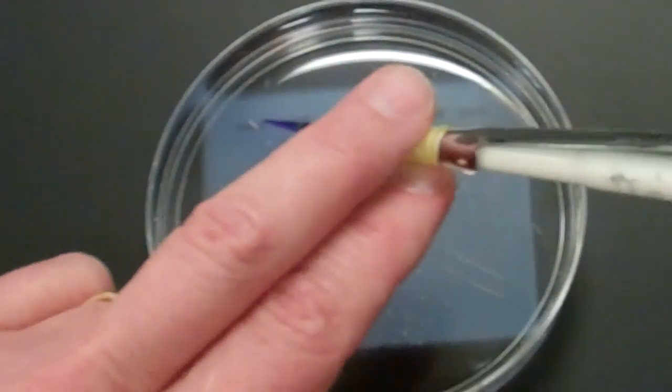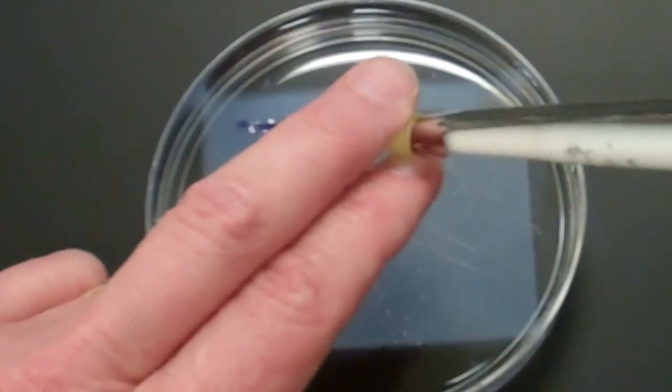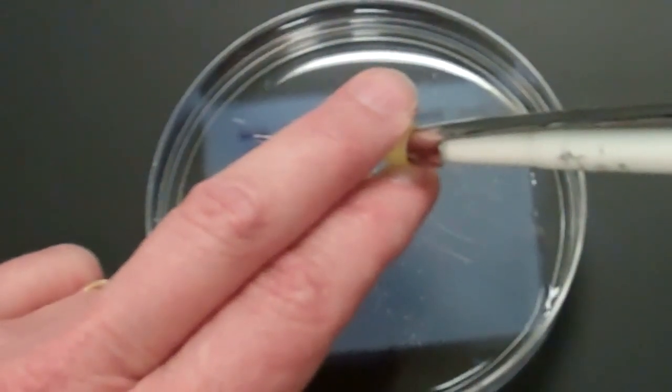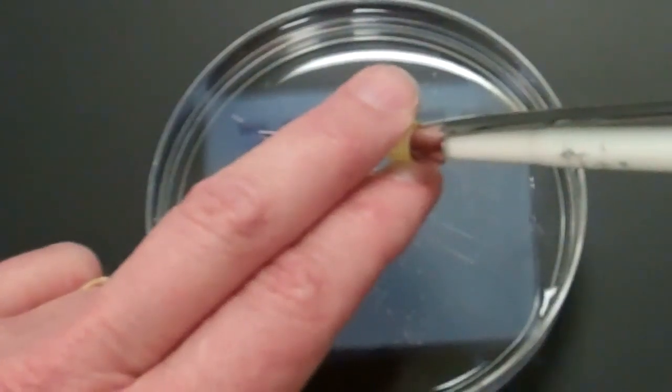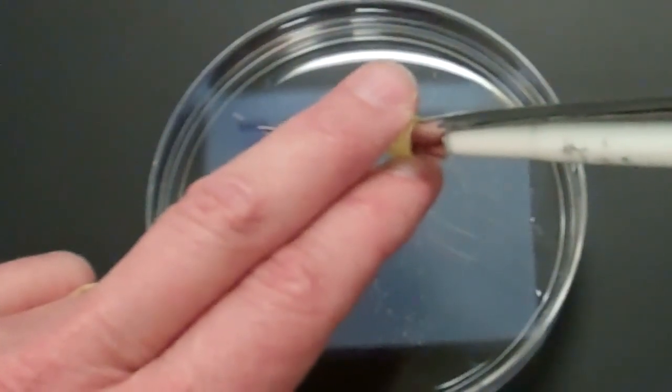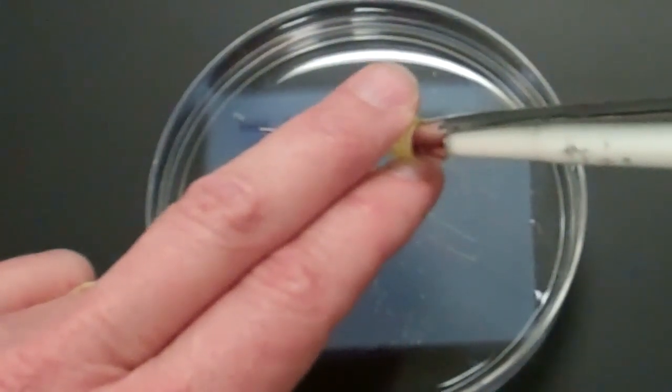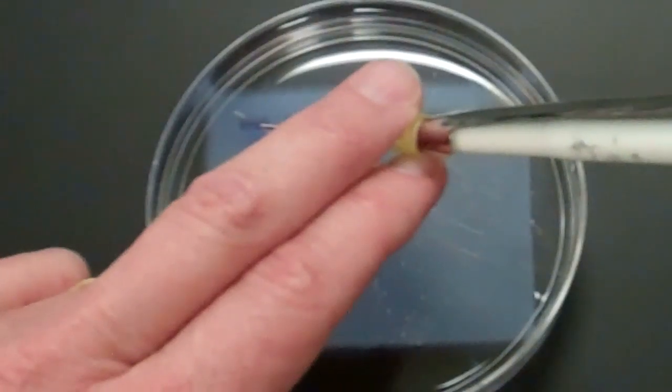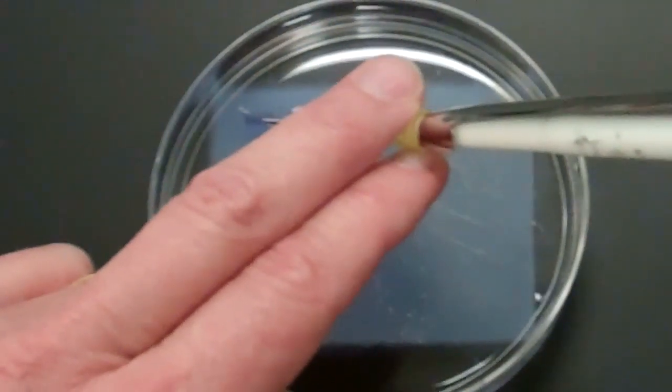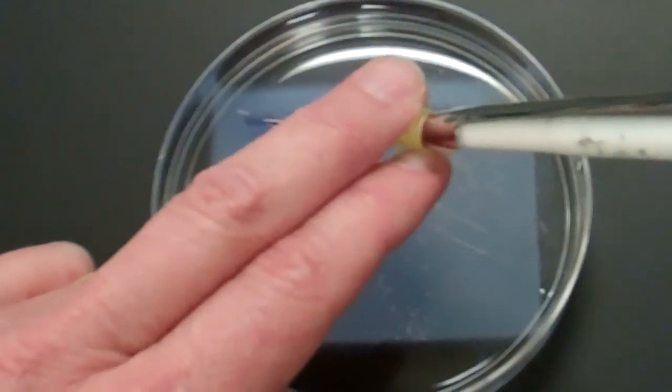So I'm angling it so that you can see it. I'm going into that first well. Now a little puff of dye just floated away. And that's okay. Once I know that I'm right above the well, and I know that because my tip is just above it, and actually it's in it a little bit, and I can move my gel.